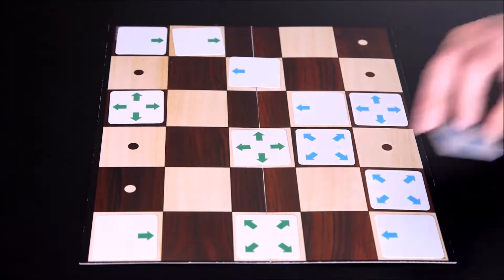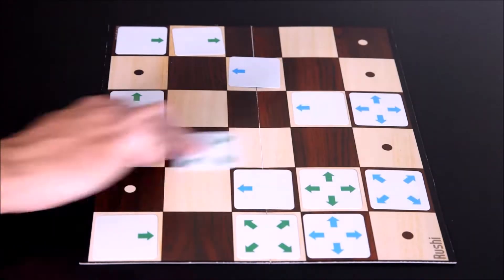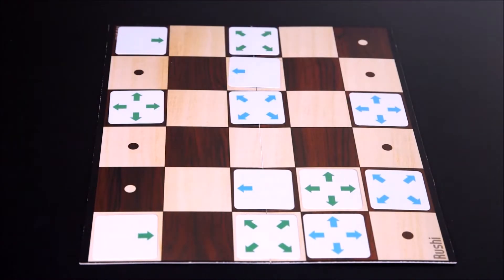Once a player places their card on that square, they have to return the card that was pointing to it to their hand to be played on their next turn.